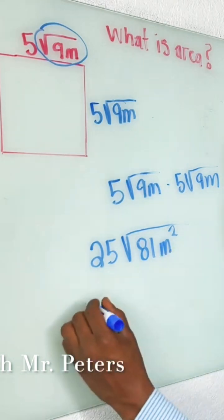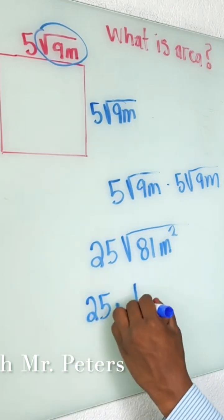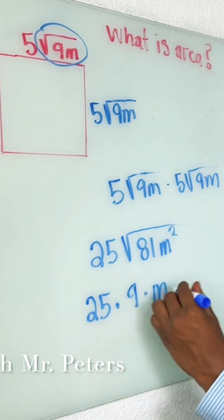Remember, 81 is a perfect square. So this is 25 times the square root of 81, which is 9, times the square root of m squared, which is m.